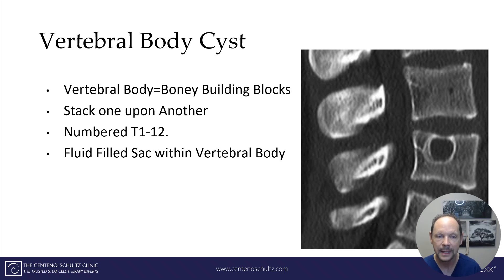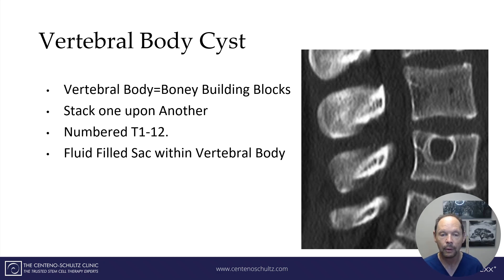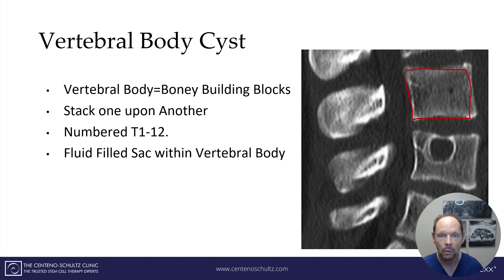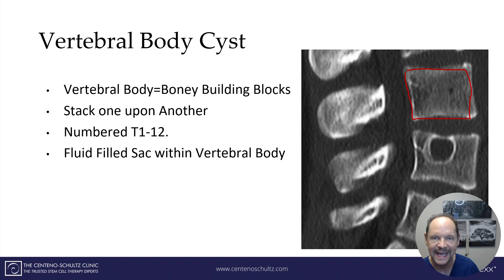The second type is a cyst that occurs in the vertebral body. The vertebral bodies are the bony building blocks that stack one on top of the other, numbered in the thoracic spine from T1, T2, T3, all the way down to T12. A vertebral body cyst is simply a fluid-filled sac within the vertebral body, and you can see it here in this image.